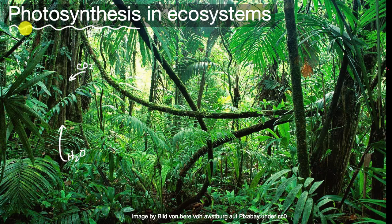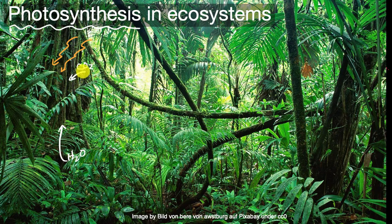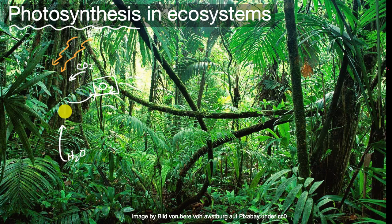It uses energy from the sun — I'll draw that as these yellow squiggles coming from the sun — in order to do two things. The plant is going to be building itself using the matter from the carbon dioxide and the water, while also expelling oxygen as a byproduct. This matter the plant takes from its environment through photosynthesis becomes both the structure of the plant and a store of energy in the form of sugars.